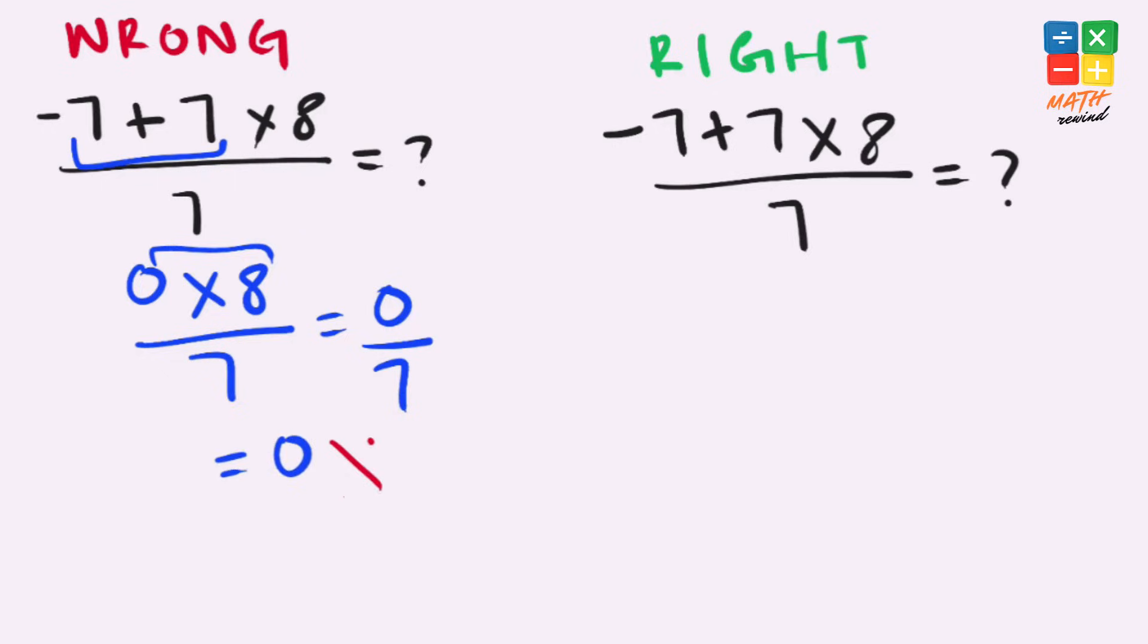But this answer is not right because according to the order of operations we must solve parenthesis then exponents then multiplication and division and finally addition and subtraction. Remember if in any expression you have both multiplication and division present you must work from left to right and same applies to addition and subtraction.